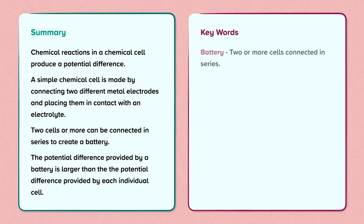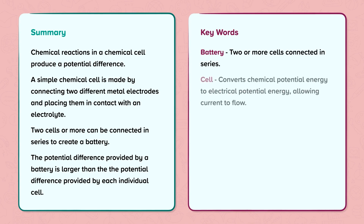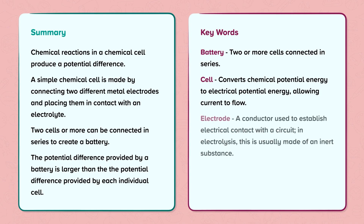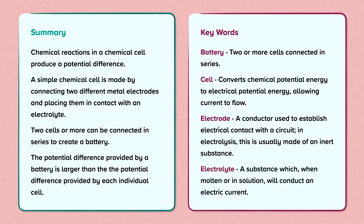Keywords. Battery: two or more cells connected in series. Cell: converts chemical potential energy to electrical potential energy, allowing current to flow. Electrode: a conductor used to establish electrical contact with a circuit; in electrolysis, this is usually made of an inert substance. Electrolyte: a substance which, when molten or in solution, will conduct an electric current.